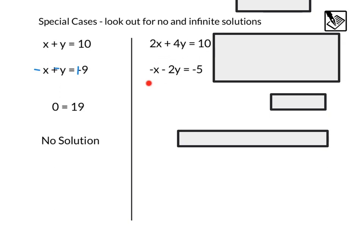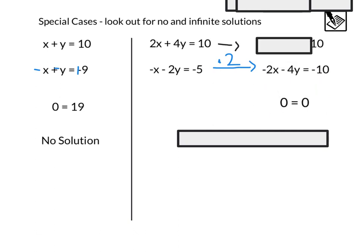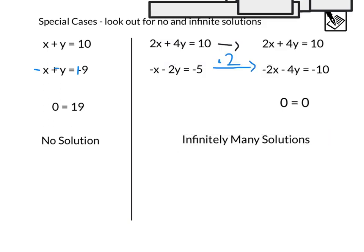Here we have 2x plus 4y equals 10. Negative x minus 2y equals negative 5. Looks like we need a multiplier to cancel. I'm going to multiply the bottom equation by 2 so I can cancel out those x's. That's going to give me the top equation the same. Multiply bottom equation by 2. We'll get negative 2x minus 4y equals negative 10. Now we can see 2x minus 2x cancels. 4y minus 4y cancels. 10 minus 10 also cancels. We end up with 0 equals 0. This is a true statement which means that this is the exact same line and we have infinitely many solutions.